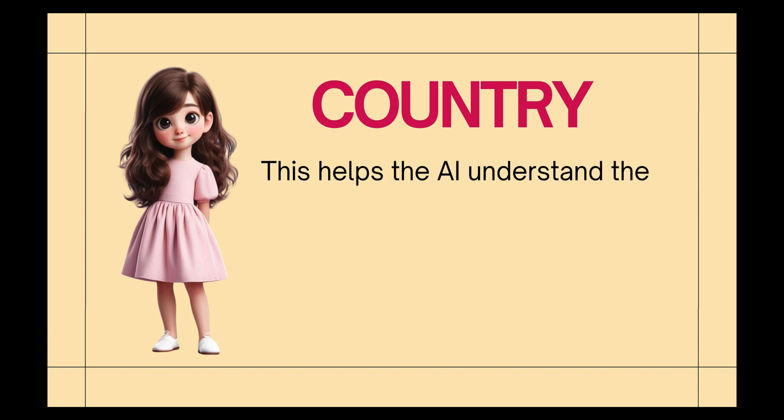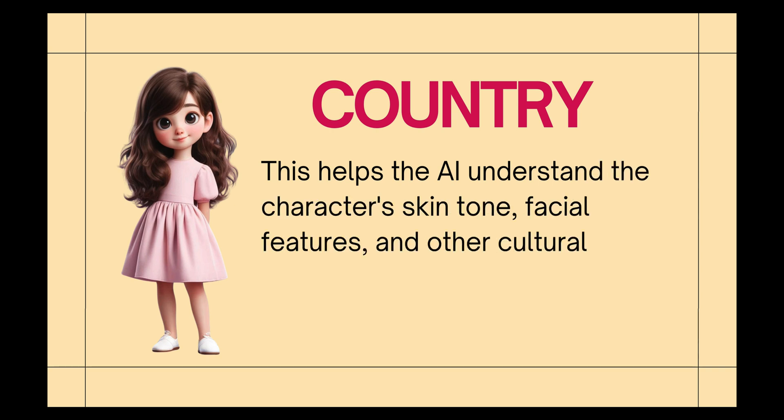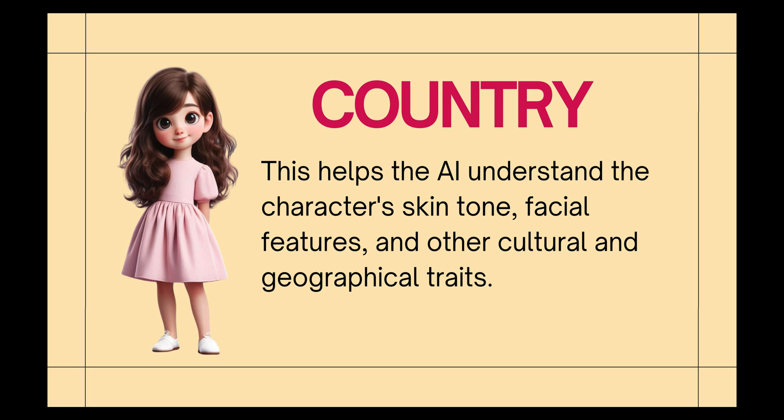Country: this helps the AI understand the character's skin tone, facial features, and other cultural and geographical traits. For example, specifying that the character is from the USA might suggest a fair skin tone, blue eyes, and a high nose, while a character from Japan might have a lighter skin tone, dark brown eyes, and straight black hair. Providing the country helps the AI generate characters with accurate and consistent appearances.